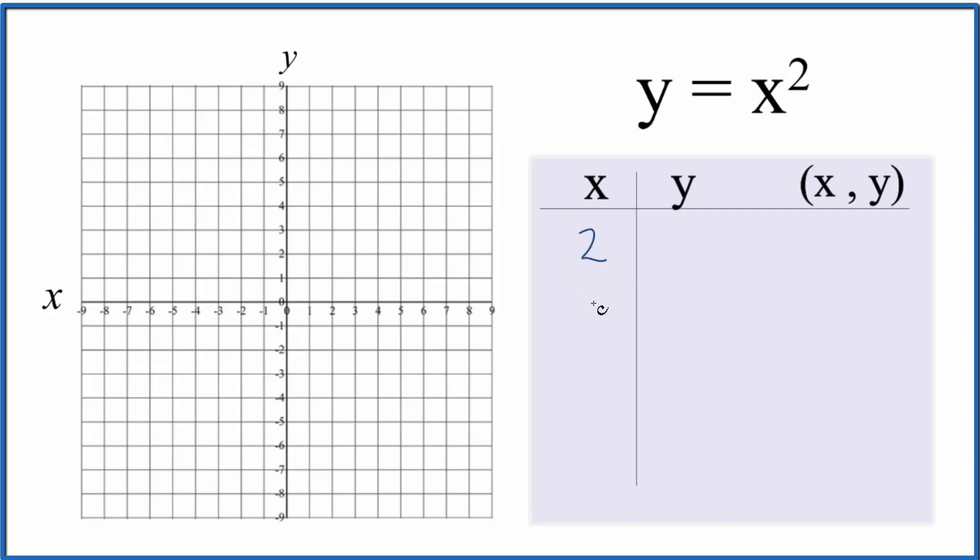So I'm going to start out and say, how about 2, 1, 0, negative 1, and negative 2. I think these values should be somewhere on the graph here.